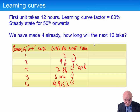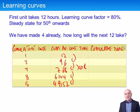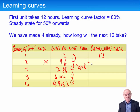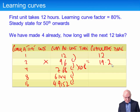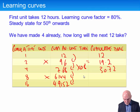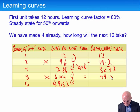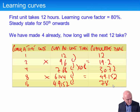The third column is the cumulative time. One unit at an average of 12 gives a total time of 12. Two units at an average of 9.6 gives 19.2. Four units at 7.68 gives 30.72. Eight units at 6.144 gives 49.152. And 16 units at 4.9152 gives a total cumulative time of 78.6432.